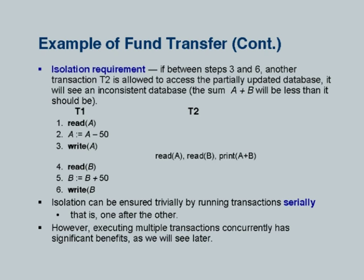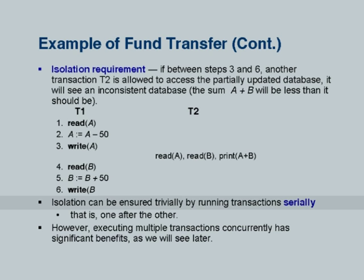What does isolation mean in this context? If T2 runs, it should see the state before T1 executed or the state after T1 executed. If T2 ran before T1, the sum of the accounts would be whatever it was initially. If it ran after T1, the sum would still be the same — T2 is seeing a consistent state of the database. But if it runs in the middle like this, it has not been isolated. One condition which ensures isolation is to run transactions serially — if you run one after another, there is no way a transaction can see an intermediate state of another one.